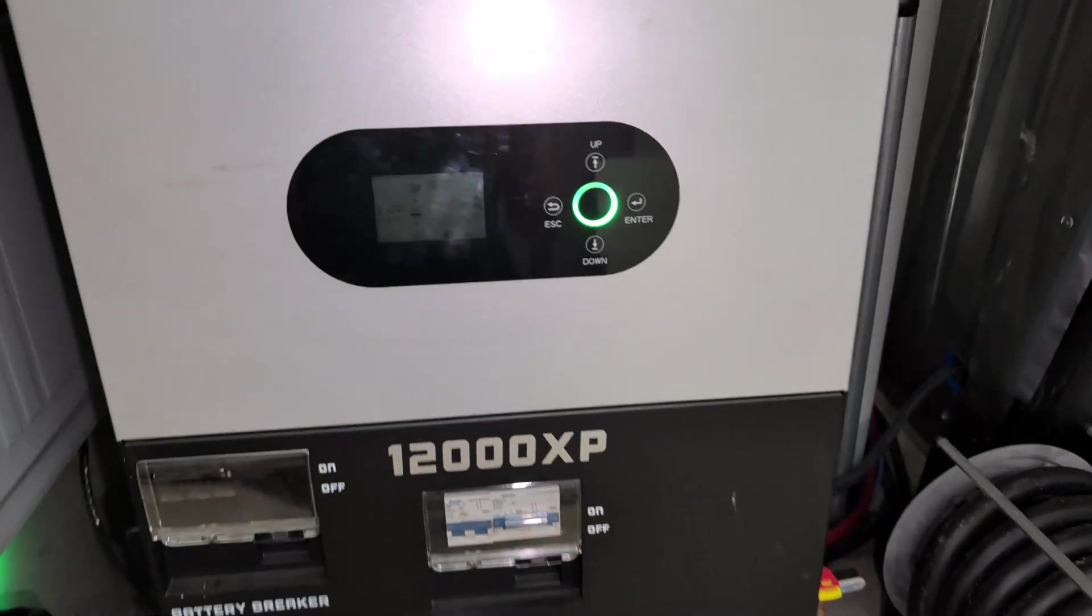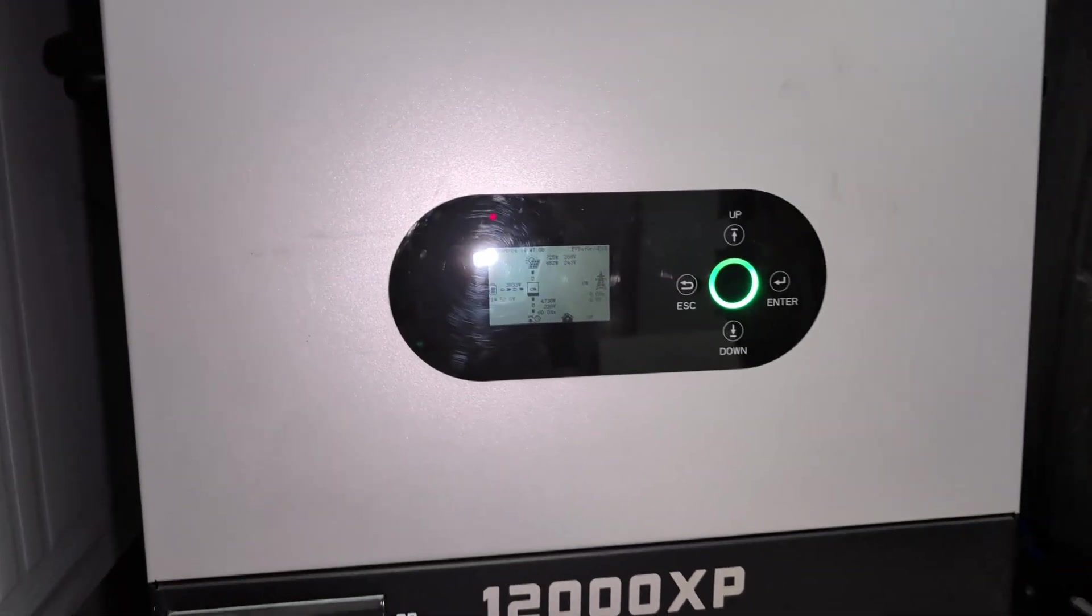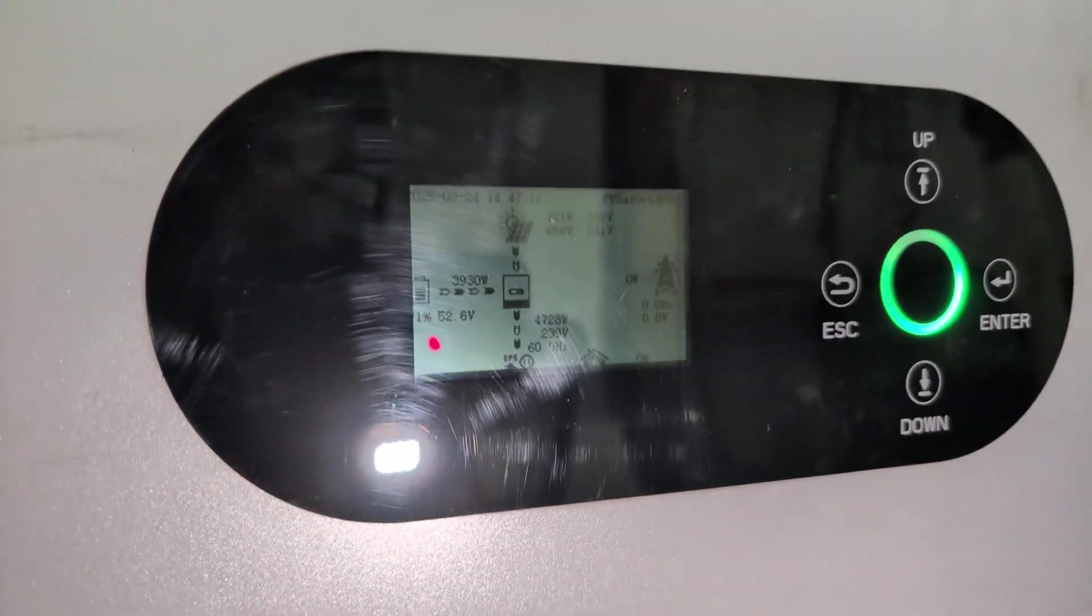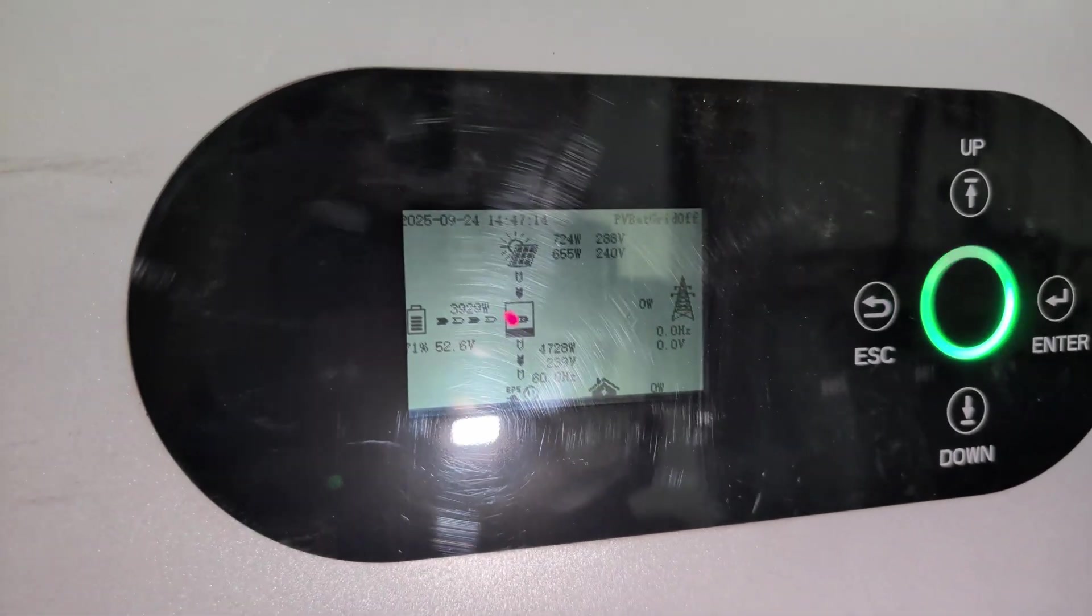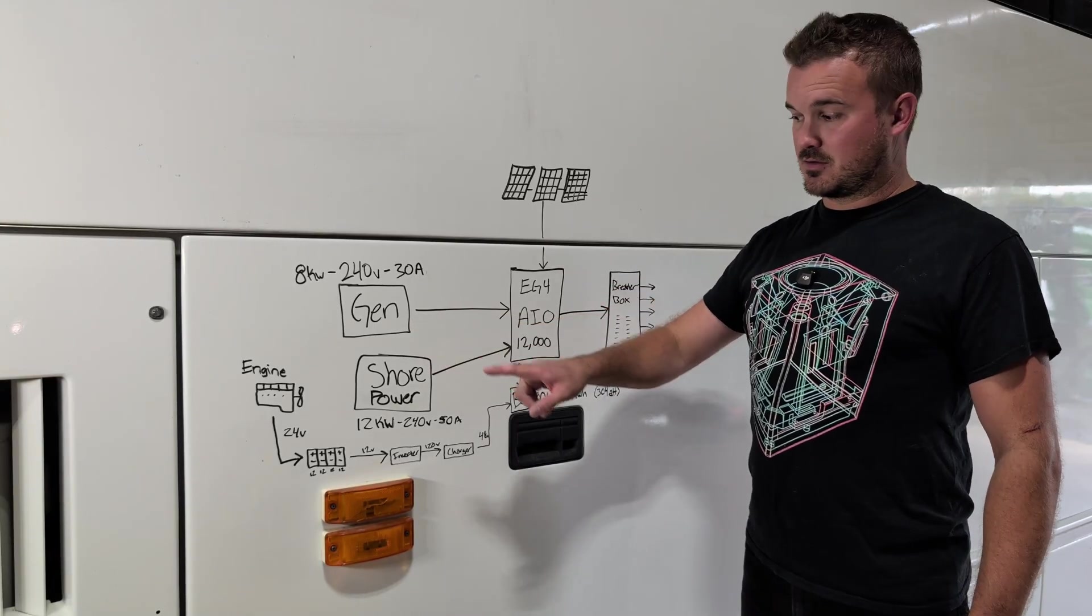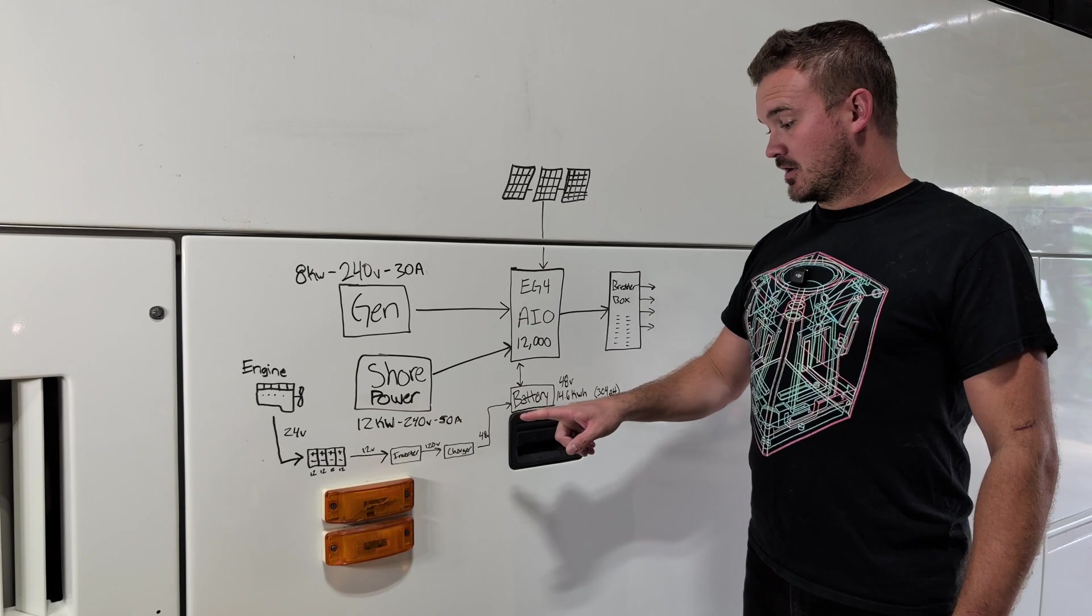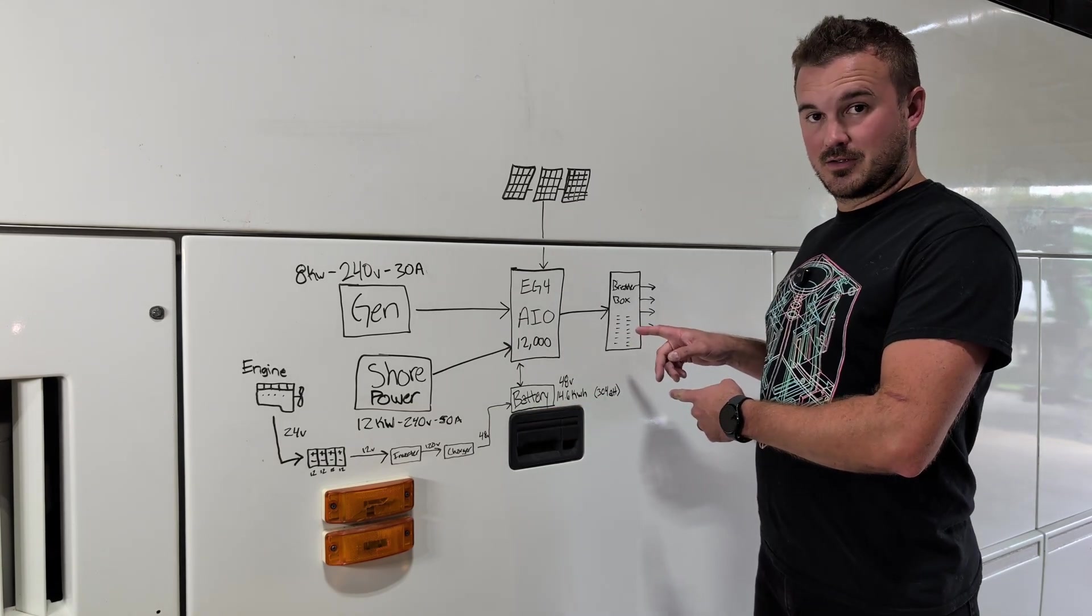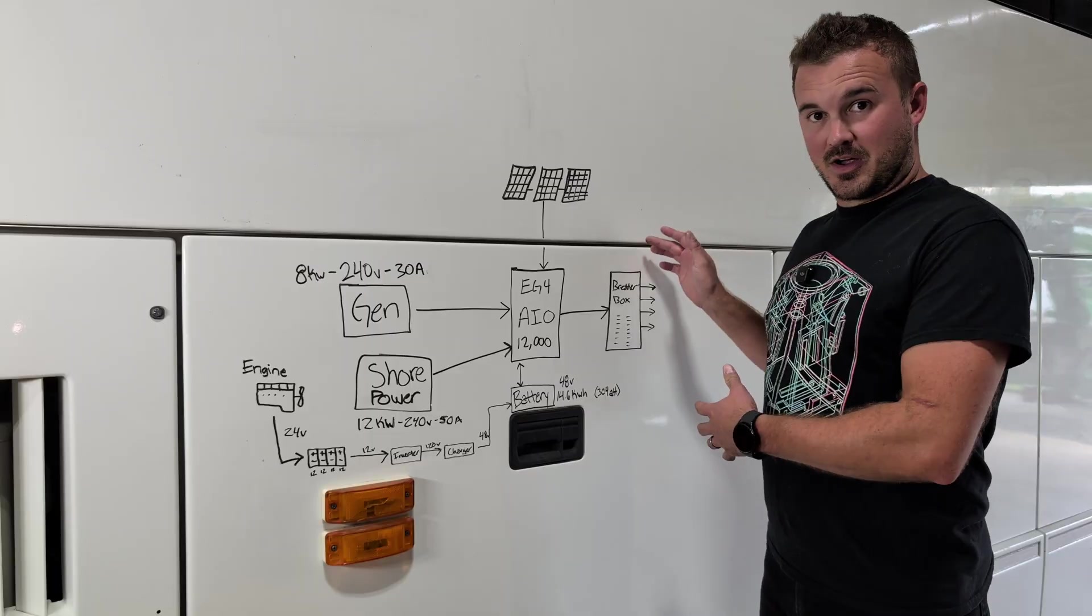It is an all-in-one charger, inverter, pass-through unit. So it does all the things. It can accept solar input, generator input, shore power, and connect to a battery, all and output to a breaker box. And then from there into the bus.